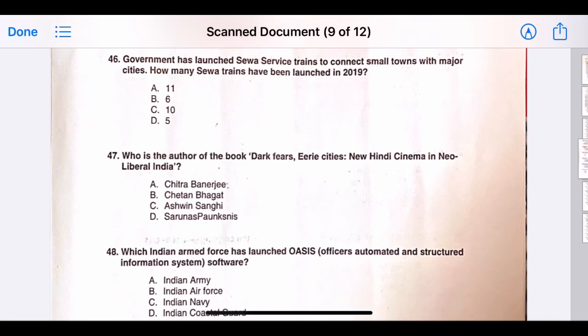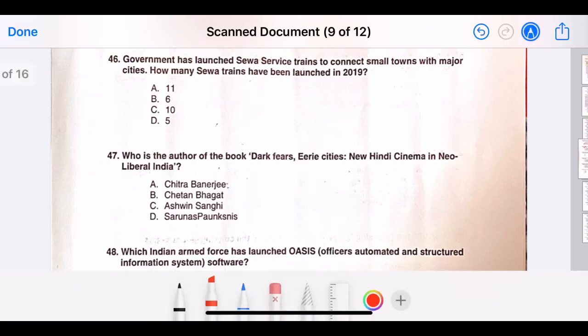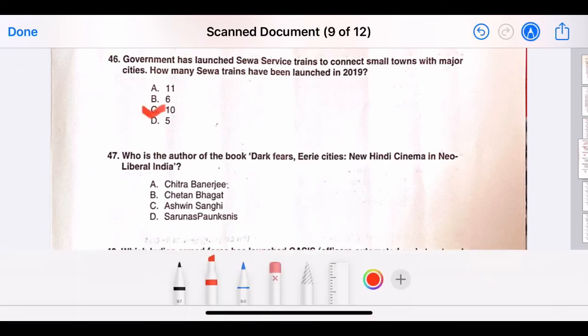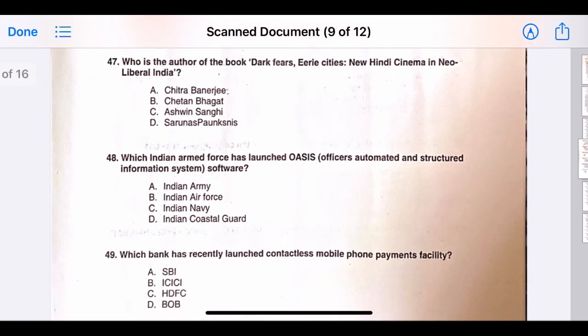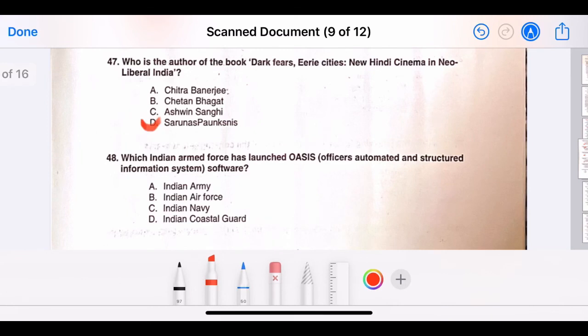Forty-six, government has launched SEWA service trains to connect small towns with major cities. How many SEWA trains have been launched in 2019? The correct answer is option C, 10. Forty-seven, who is the author of the book Dark Fierce Early Cities, New Hindi Cinema in Neo-Liberal India? The correct answer is option D, Sarunas Ponsknis.